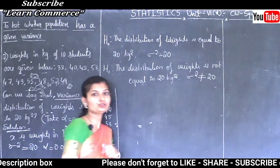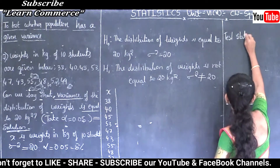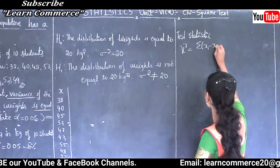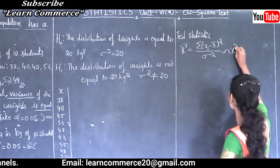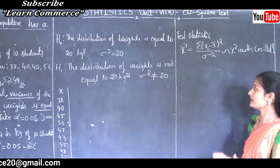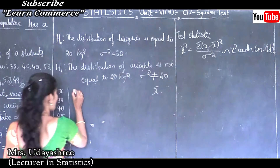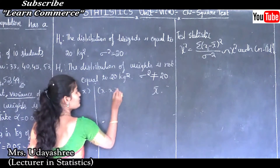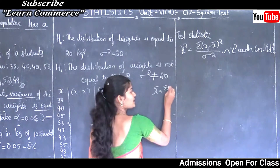Step 3: Test statistic. Chi square = summation of (xi minus x̄) whole square divided by sigma square, which follows chi square distribution with n minus 1 degrees of freedom. Based on this formula, we need to find x minus x̄. First, I will find x̄, using the formula x̄ = summation x divided by n.